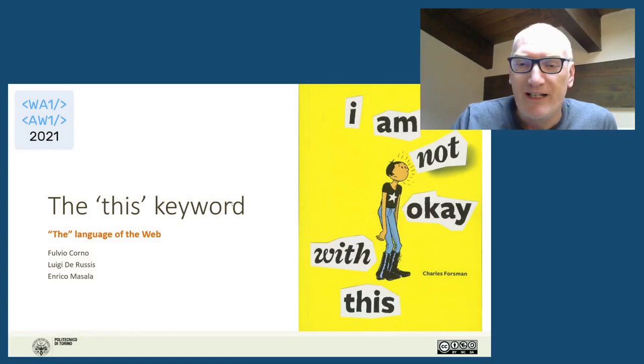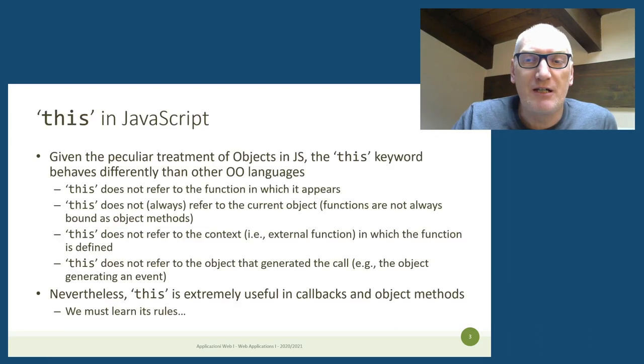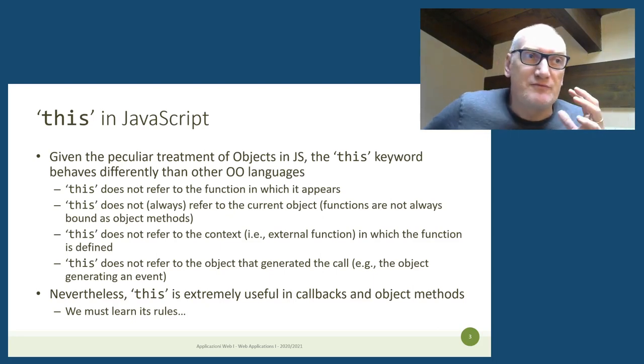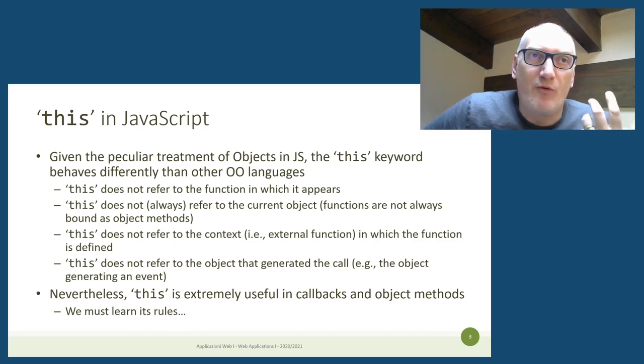Today I'll try to explain the meaning and semantics of the `this` keyword, which is common to basically all object-oriented programming languages like Java, where you use `this` to access fields of a class, and Python, where we have `self`. JavaScript has its own special way of doing things, and we'll discuss where and how to use this keyword and what it means.